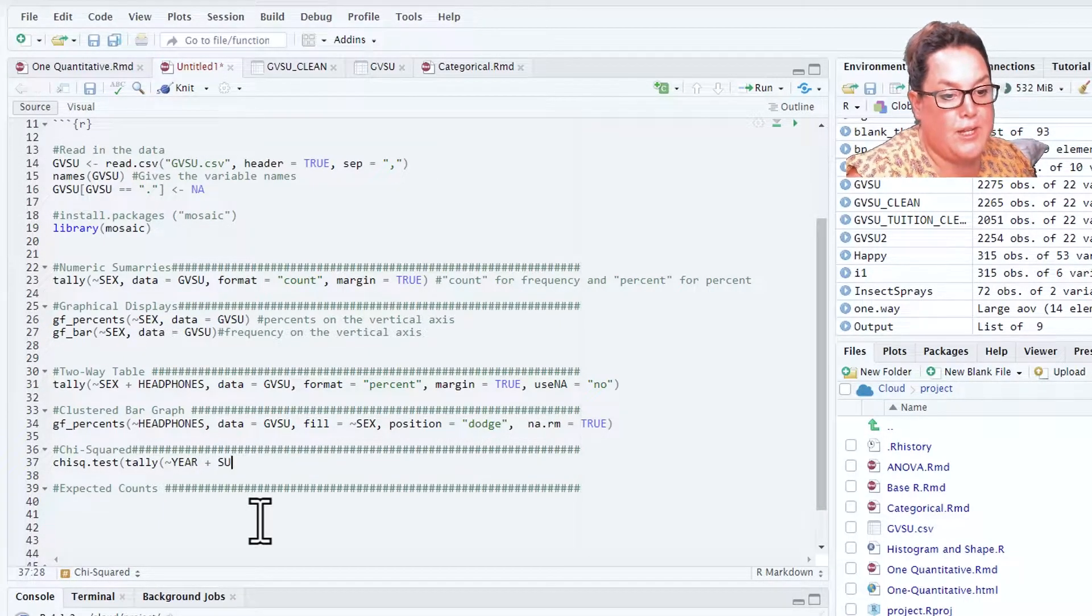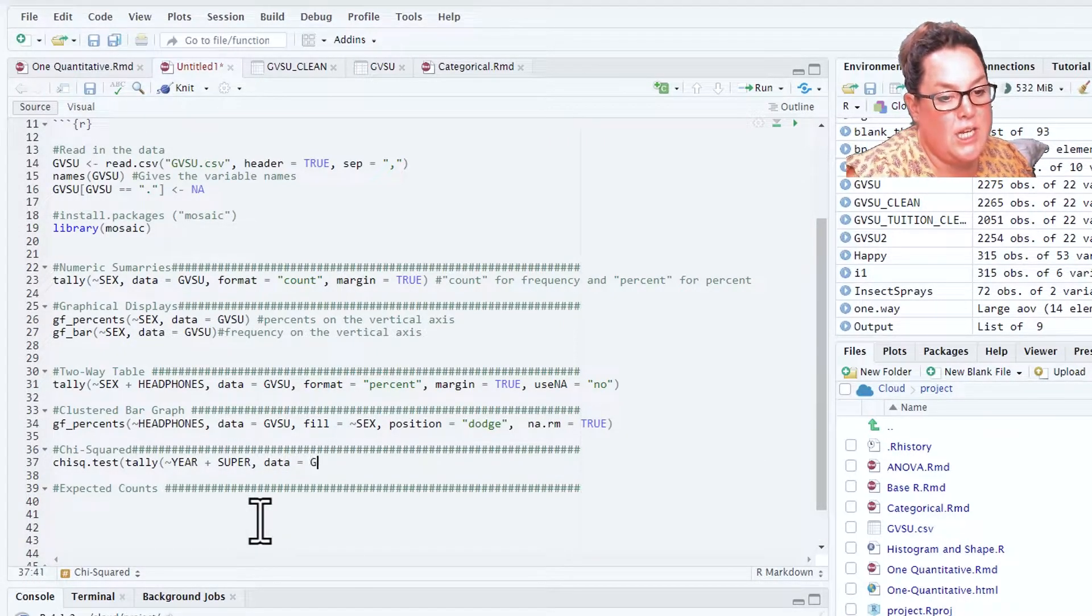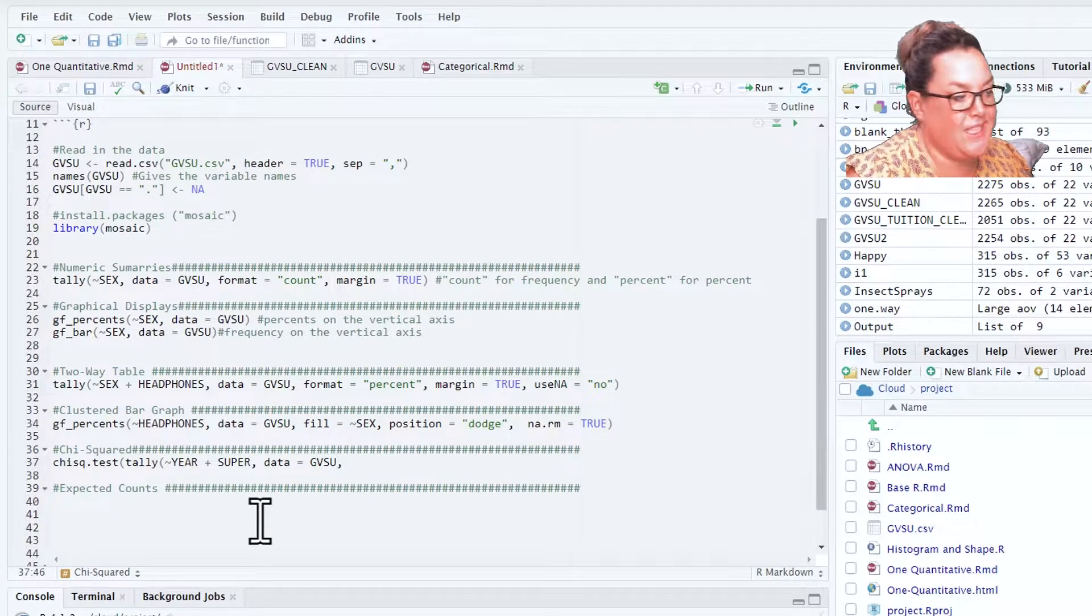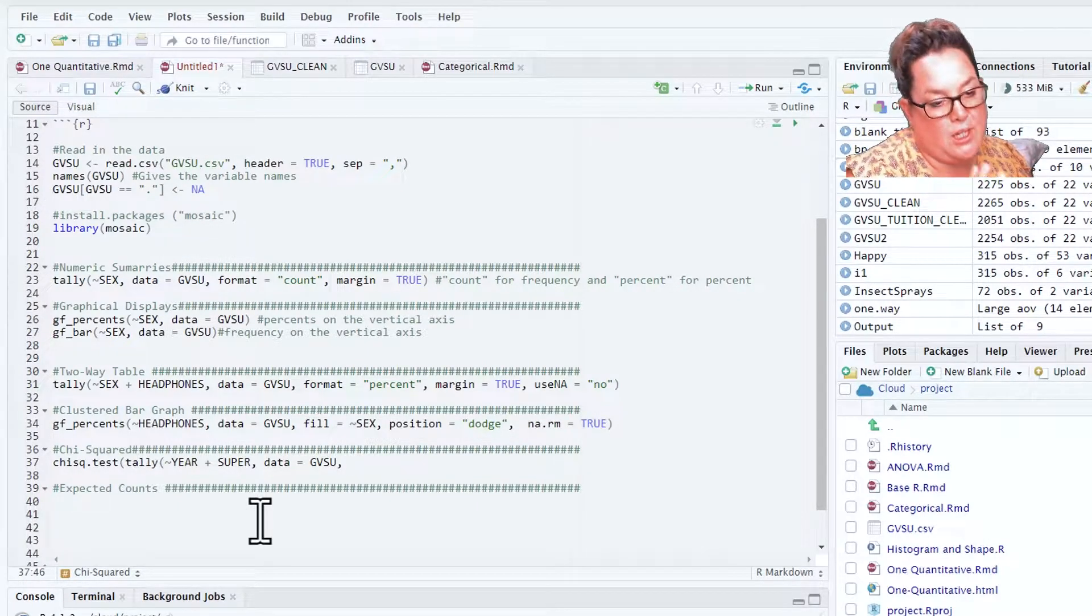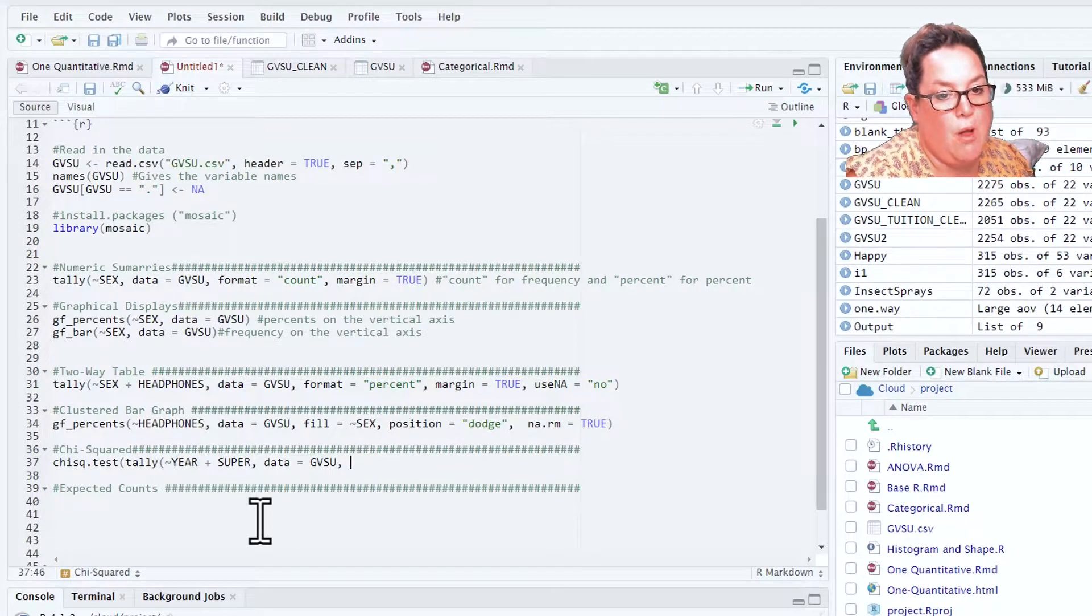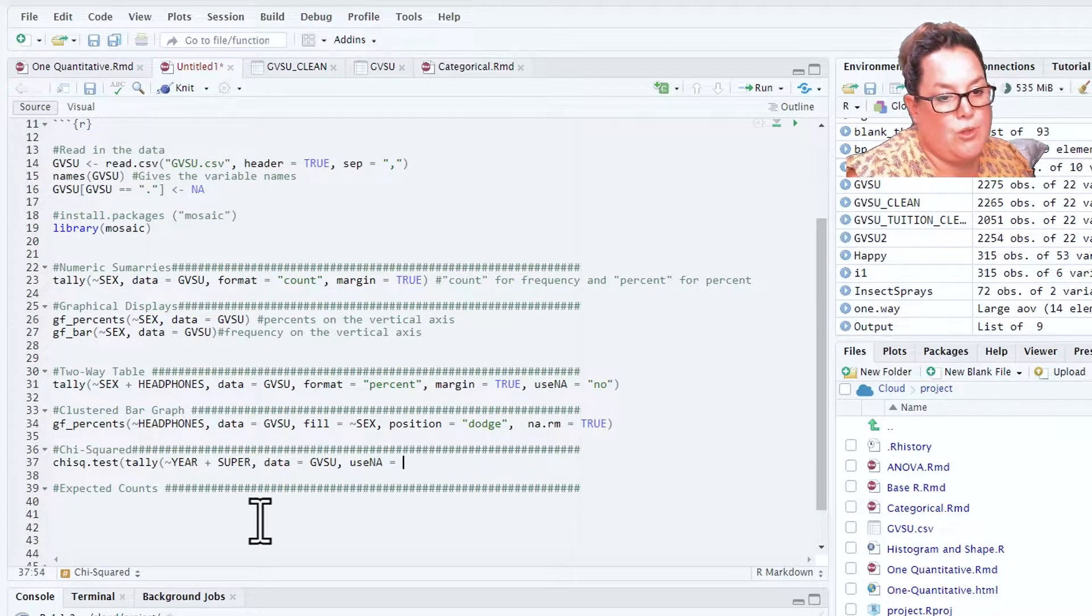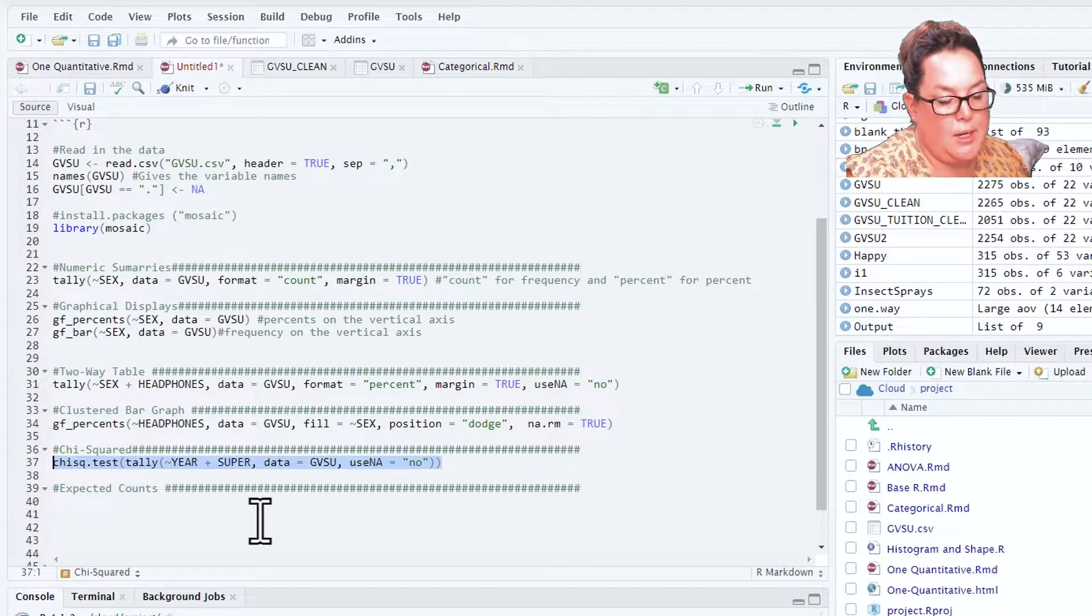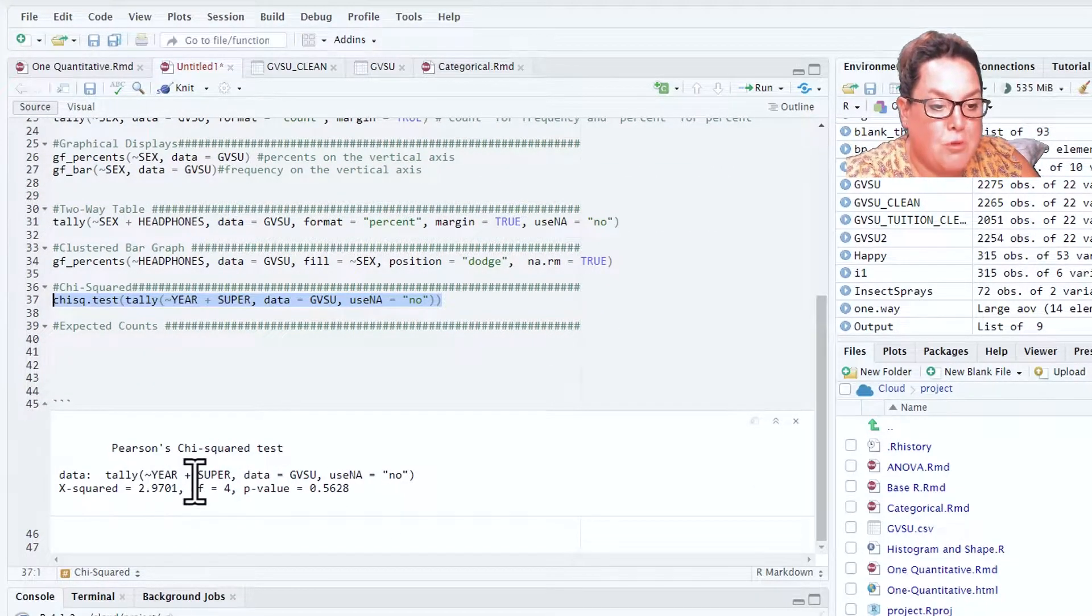Then I say my data equals GVSU. I will not include that format percent because that's not necessary. I'm telling it to do the analysis for this contingency table and then I'm going to say use NA equals no. I'll close that up and highlight the whole row and do my shortcut keys Control+Enter and you can see our results.